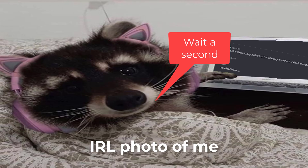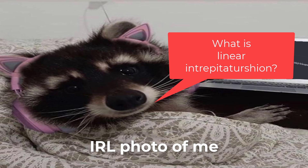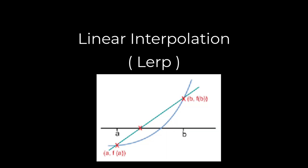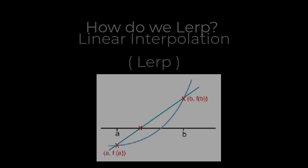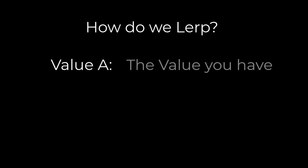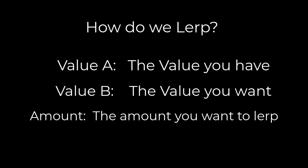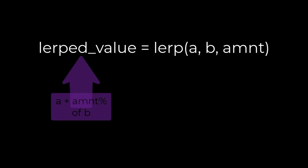Wait a second — what is linear interpolation? Linear interpolation, or LERP for short, helps smooth out changes by easing a value from one point to another. To be able to LERP, we need to make use of three values: Value A, typically the value you have; Value B, the value you want; and the amount you want to LERP, usually a percentage — a number between zero and one. Plugging all these numbers in, LERP will return a percentage value back to us.